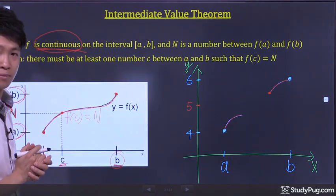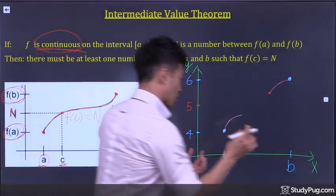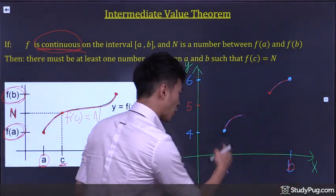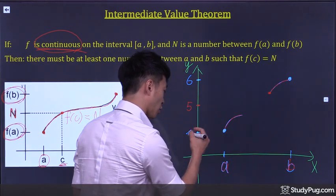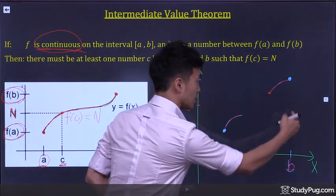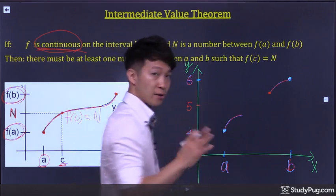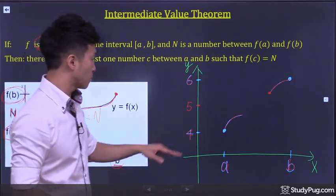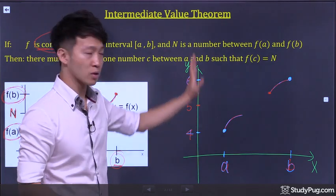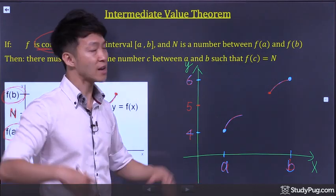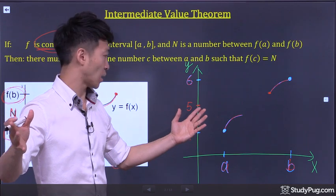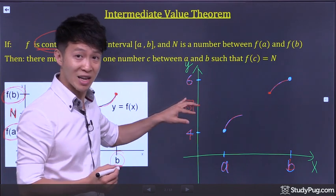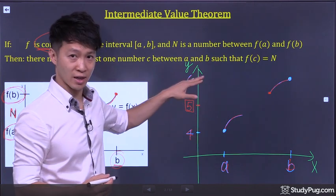Now look at how I draw the curve for a function that's not continuous. At some point I will have to lift my pencil and jump to here, and then draw the curve again. Any time I lift my pencil, that function is not continuous. So on the closed interval a and b, let's say point a has a value of 4, and point b has a value of 6. Now, if I were to ask you to pick a number between 4 and 6 on the y-axis — any number — say you pick 5. Then 5 is an intermediate value between 4 and 6.